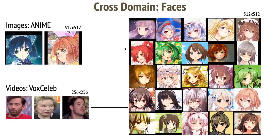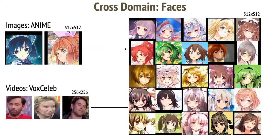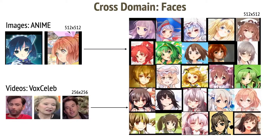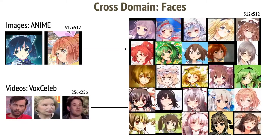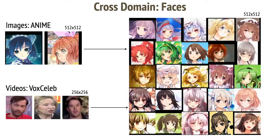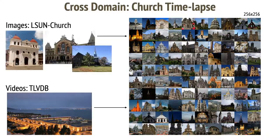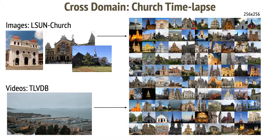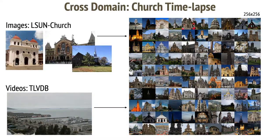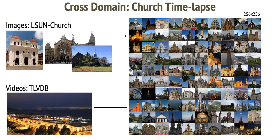The same works for anime images. We retrain the generator to produce diverse anime images. Video part is again trained on people faces. We get talking anime characters. I'd like to note here that the framework has not seen any talking dog or an anime face during training. We then can do a similar thing for time-lapse videos. We use images from the LSAN church dataset and videos from a time-lapse dataset. We can then generate time-lapse churches, which again have not been observed during training.